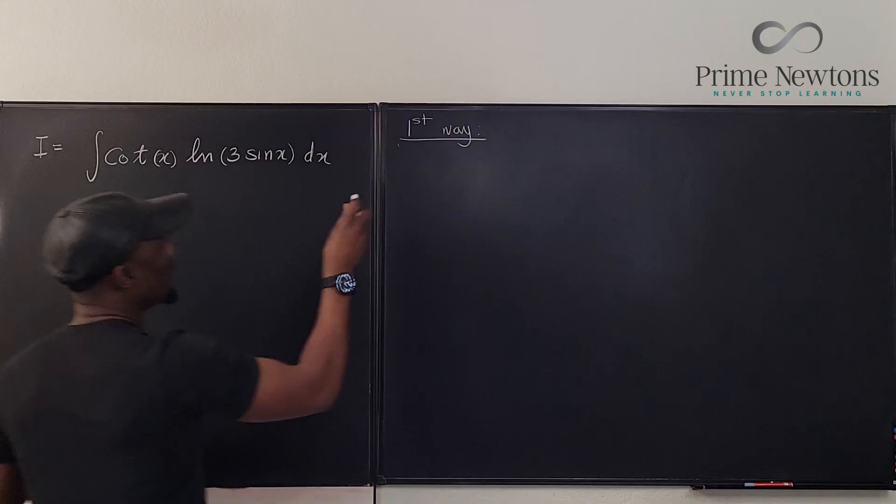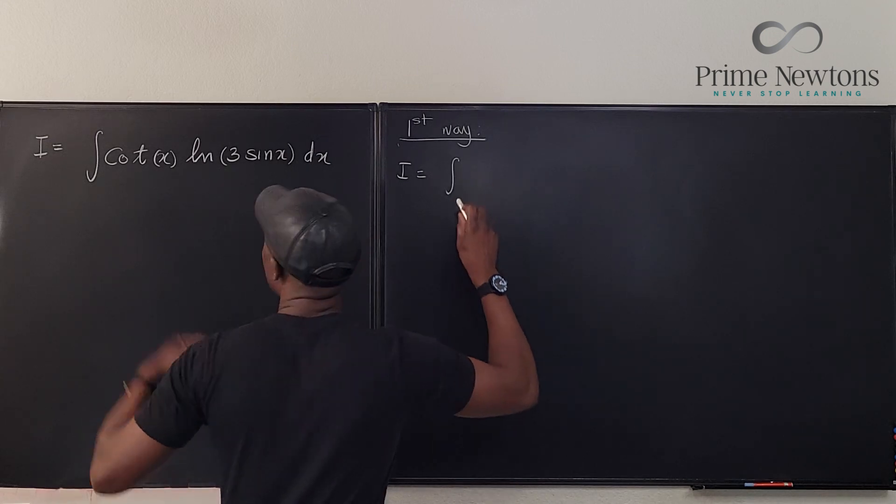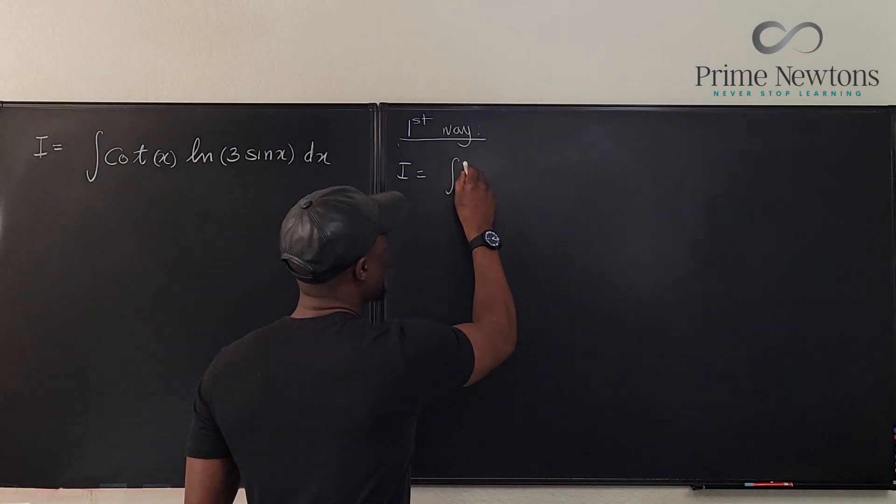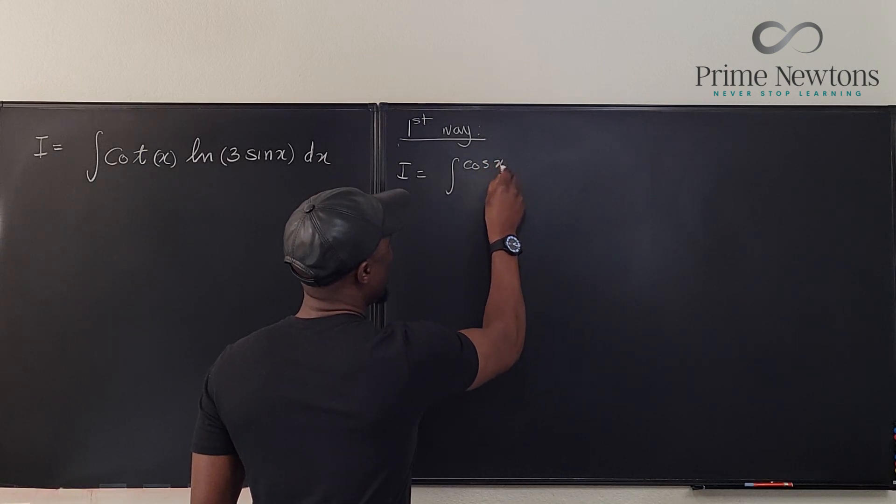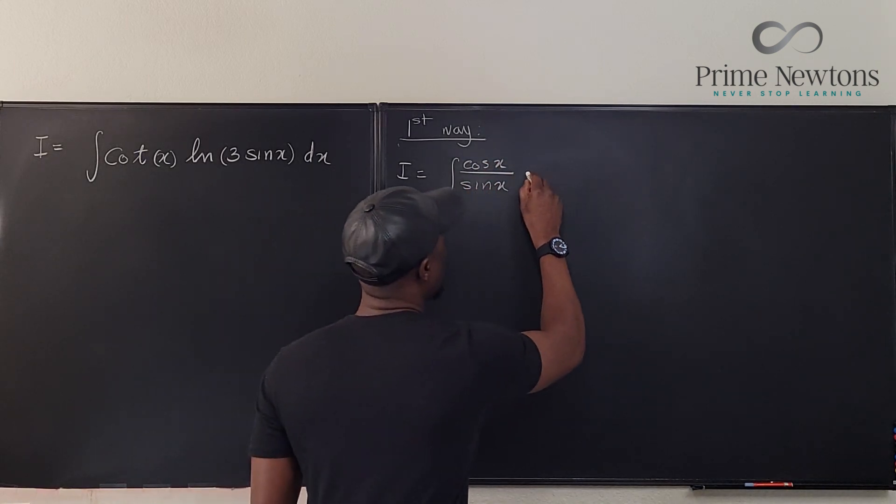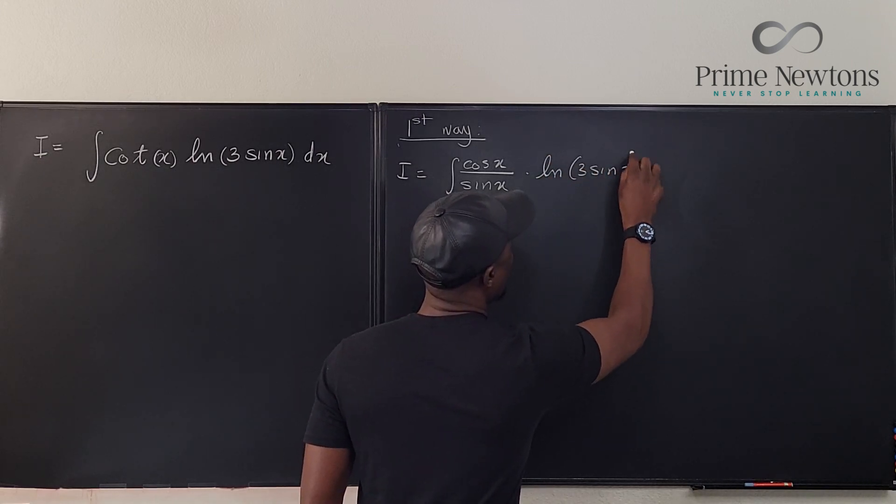I'm gonna do it the first way. We have I equals the integral of cotangent x rewritten as cosine x over sine x, multiplied by the natural log of 3 sine x.